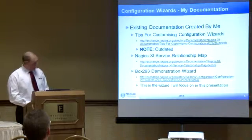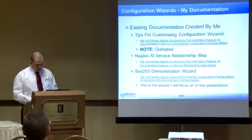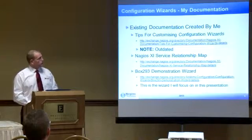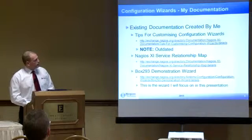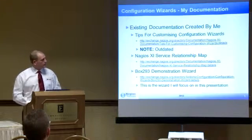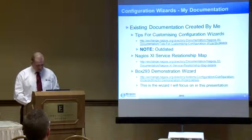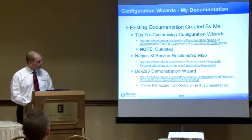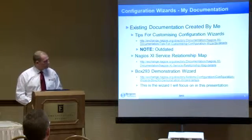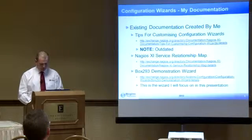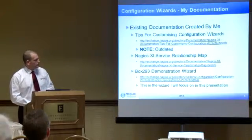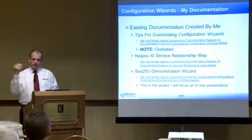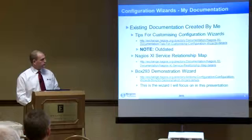When I first started out there was no official documentation for Nagios XI configuration wizards, so after creating a couple of wizards I decided to put some notes together and create my own documentation. Some of these are a little outdated now, but the service relationship map is still a very handy document. The BOX-293 demonstration wizard is what I'll focus on in this presentation — it's what I call documentation. When you look at the code it's heavily commented so anyone can understand how it all fits together.